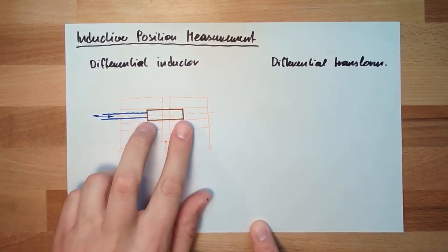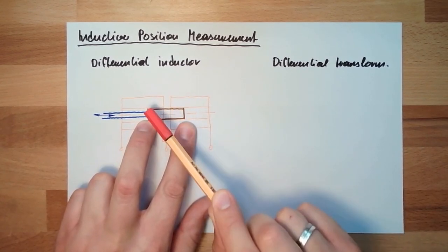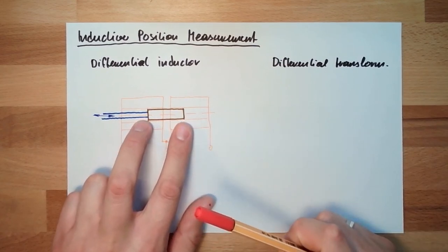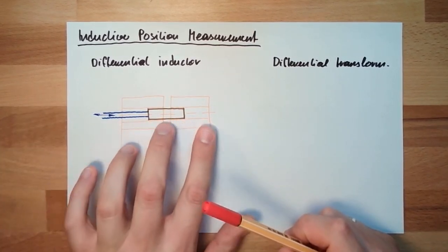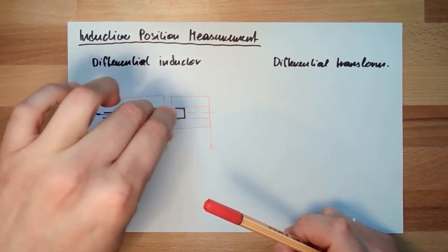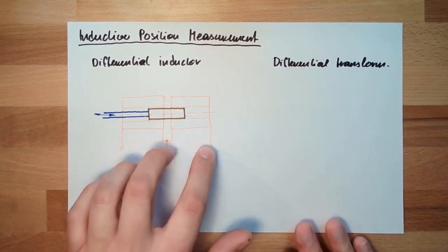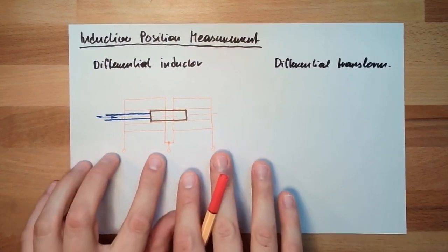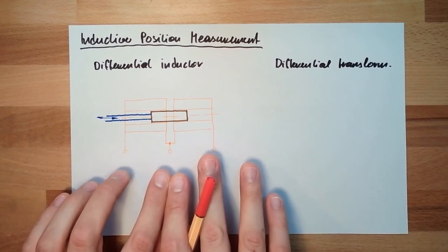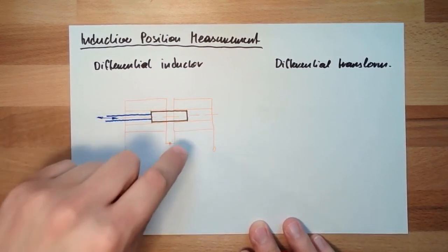This means if I am moving this from its middle position, this one will lose inductivity and this one will gain inductivity. So if I am moving in this direction, this one gets higher inductivity and this one gets less inductivity. If I am moving in the other direction, the opposite is true — this one gets less inductivity and this one gets higher inductivity. And this inductivity can be measured. I measure the inductivity here and here, and from the difference of the two inductivities — that's why it's called differential inductor — I can determine the position of this ferromagnetic part.